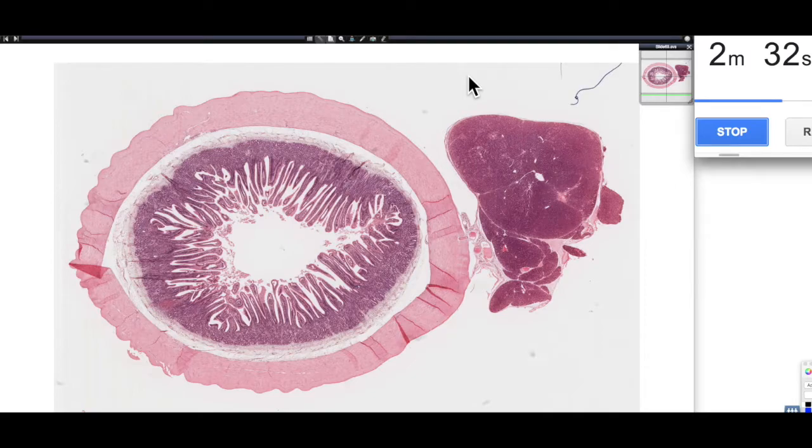And then we need to embed it into paraffin, and then we need to section it, and sometimes those knives aren't perfect, and we end up with little scratch marks on our sections. And then we need to put it onto a slide, we need to stain it, and then we need to put a little bit of glue on the top and put a little glass cover slip on the surface. And things may jump in the way in that processing stage.